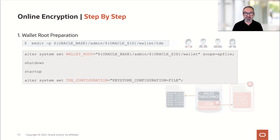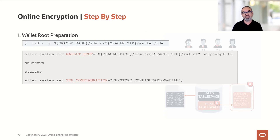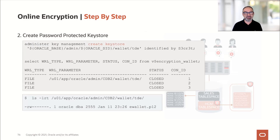Before you can encrypt the tablespace, a few preparation steps are necessary. I'll quickly go through these steps because I'd rather show you this in a demo afterwards. First, we need to prepare the wallet root — a directory where the wallet or key stores go. We set the init parameter WALLET_ROOT and TDE_CONFIGURATION. Then we create the password-protected key store, which in the old terminology was called a wallet.